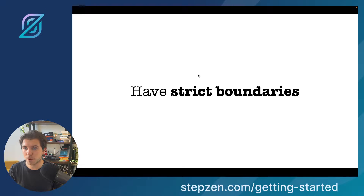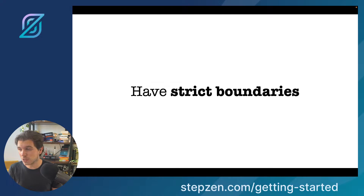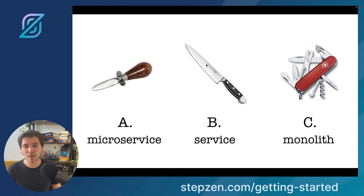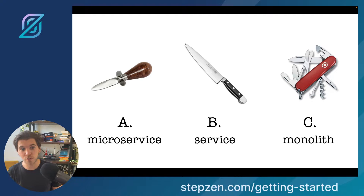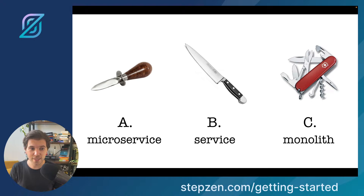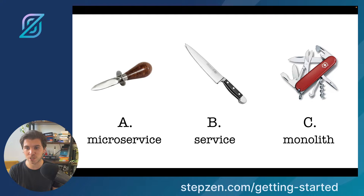You can explain this by looking at something else. Microservices have strict boundaries — and you know what else has strict boundaries? Probably any of these knives. If you look at A, you can see A is definitely a microservice because A is an oyster knife. If you ever ate oysters, they're very hard to open — you need a very specific knife. And this knife, it's very hard to do something else with it. I once tried cutting cheese — it works, but it isn't the best experience.